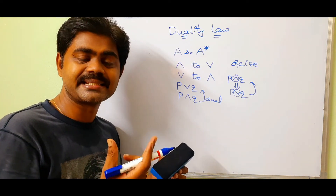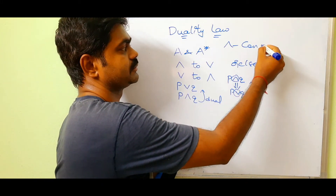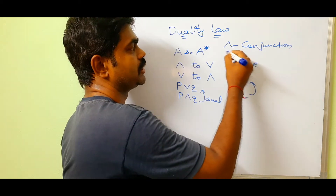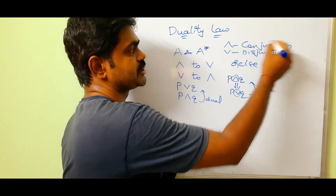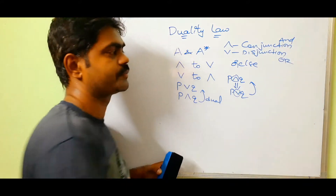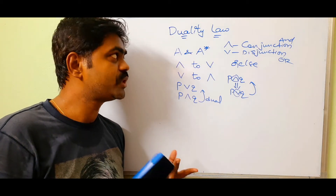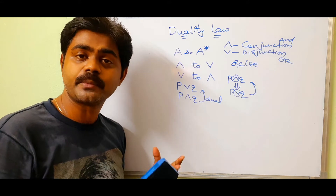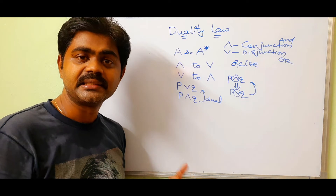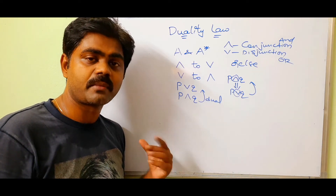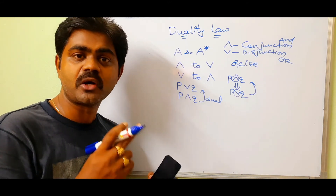AND is called conjunction and OR is called disjunction. So two formulas A and A star are said to be dual if and only if one can be obtained from the other by changing the symbol from AND to OR or from OR to AND. We will now see identity laws which follow duality law.